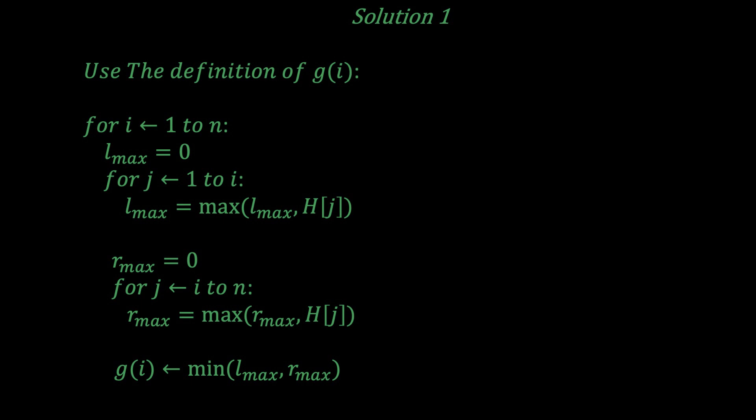Then you can do the same thing for rmax, but by looping j from i to n. This would give you the maximum on your left and the maximum on your right at the building i. All you have to do to find g is to take the minimum of both of these maximums and you're done.